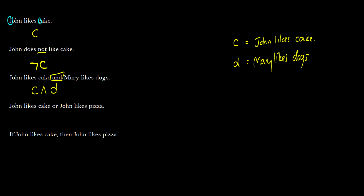In the next sentence we have 'John likes cake or John likes pizza.' We already have C for cake; we don't have anything for pizza yet, so let's call it P, where P equals 'John likes pizza.' We have cake C and pizza P, and our connective here is OR, so we put a V (∨): C ∨ P.